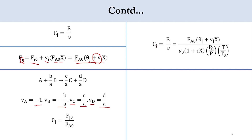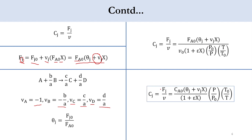For C_J equals Fj over v, substituting F_J and the variable volumetric flow rate, we get: C_J equals FA0 times (theta_J plus nu_J times X) divided by v0 times (1 plus epsilon X) times (P0/P) times (T/T0). This simplifies to: C_J equals Ca0 times (theta_J plus nu_J times X) divided by (1 plus epsilon X) times (P/P0) times (T0/T). This is the concentration term for the gas phase flow system.